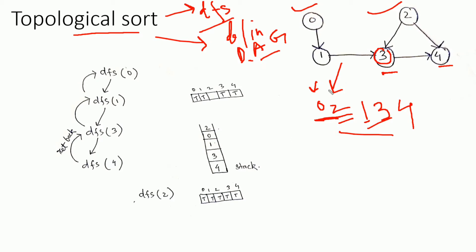We could also start DFS from vertex 2, where vertex 2 is processed first, then vertex 0. Both vertex 2 and 0 are independent jobs, and independent jobs need to be processed first before dependent jobs. Now I am going to perform DFS traversal for this graph.